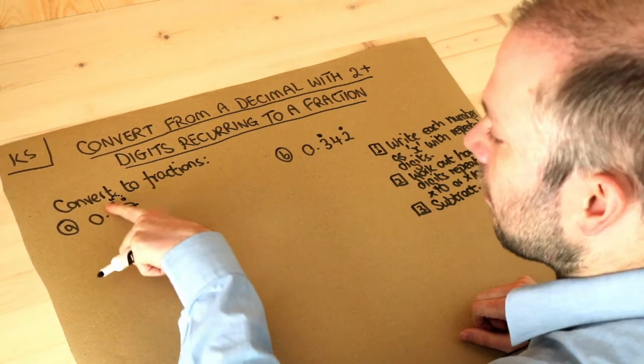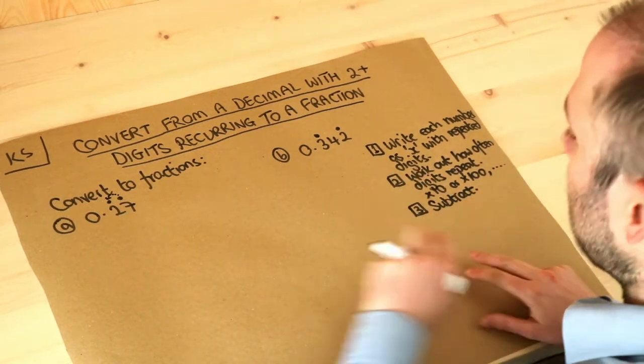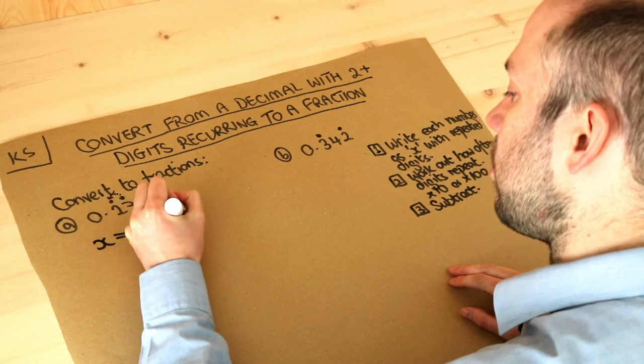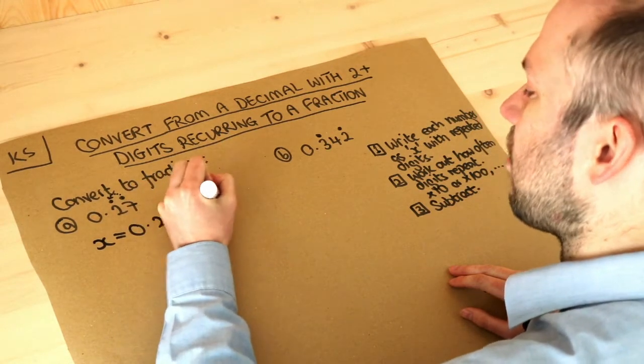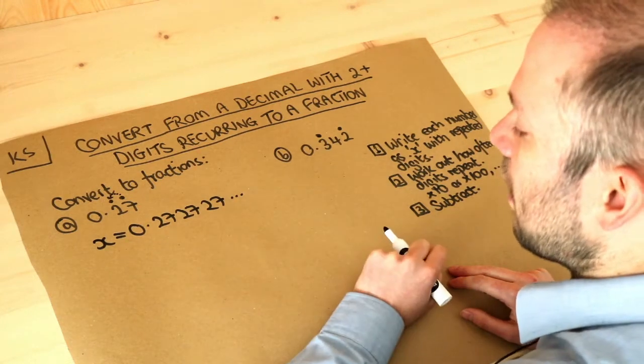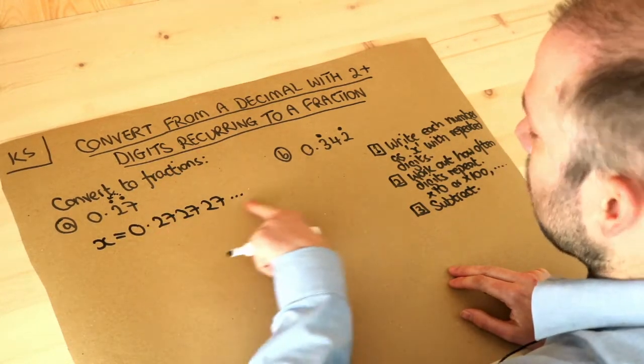And per the instructions we're going to write that as x, so x is equal to 0.27 27 27, etc. Let's just write out three times, it doesn't actually matter but just show that the digits are repeating and because this is recurring this goes on forever.